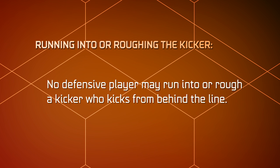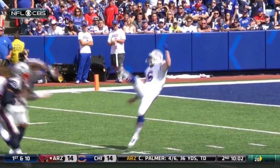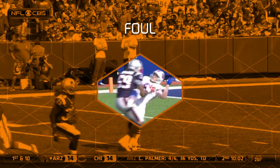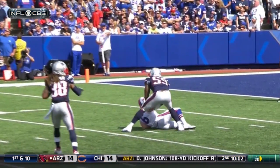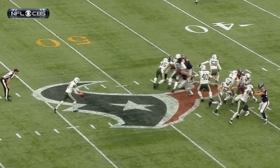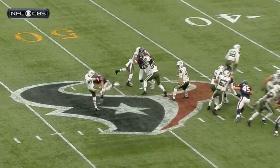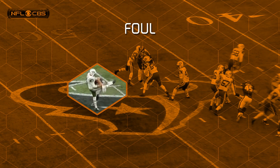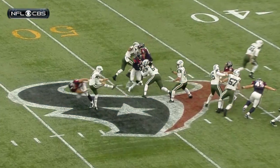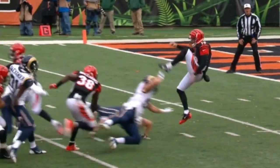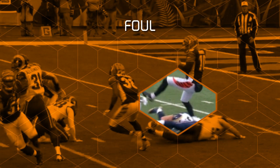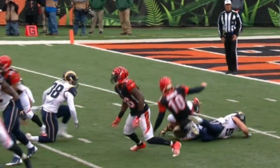No defensive player may run into or rough a kicker who kicks from behind the line. It is a foul for running into the kicker when a defensive player makes contact with the kicking leg of a kicker. It is also a foul for running into the kicker if a defender slides under a kicker and prevents him from returning both feet to the ground.